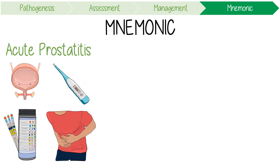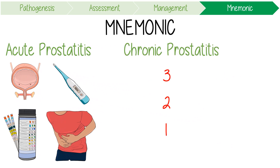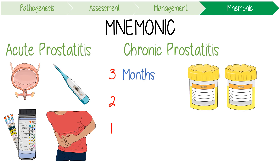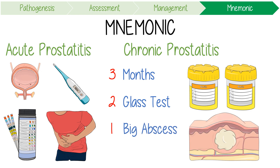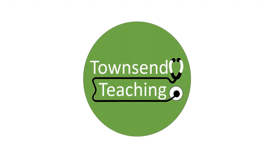The diagnosis of chronic prostatitis follows a 3-2-1 rule: it is defined as irritation of the prostate for more than three months, it can be investigated with the two-glass test, and if symptoms are just not getting better, always consider looking for one big abscess. Thanks for watching Townsend Teachings.